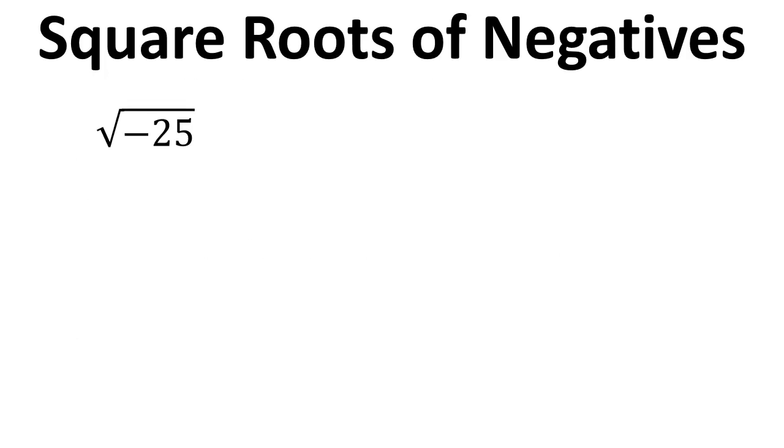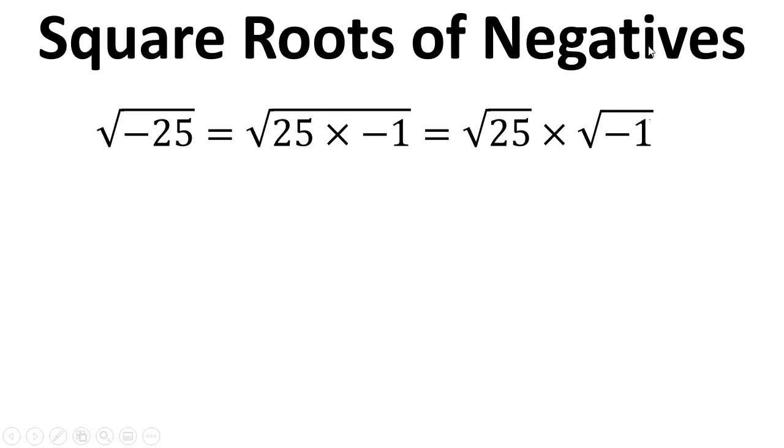We can also use these to work out the square roots of negative numbers. Square root of minus twenty-five is the same as saying square root of twenty-five times minus one. Because of the properties of square roots we can write this out as the square root of twenty-five times the square root of negative one. Square root of twenty-five is plus or minus five and then we write in i for the square root of negative one.